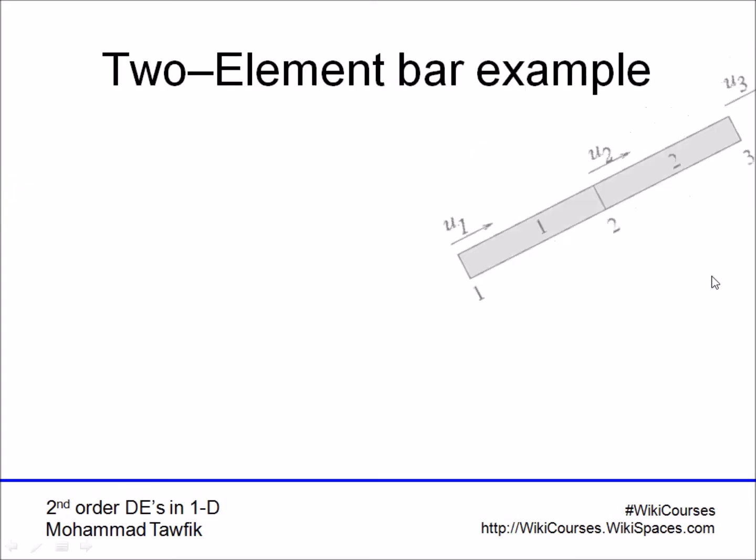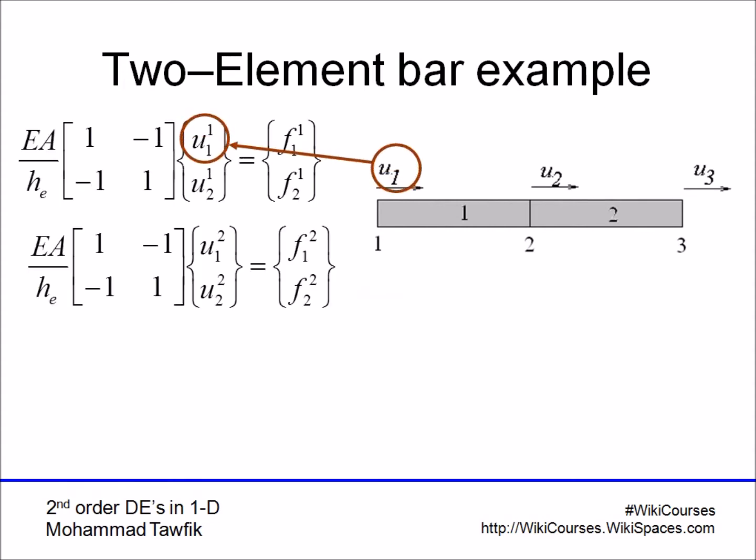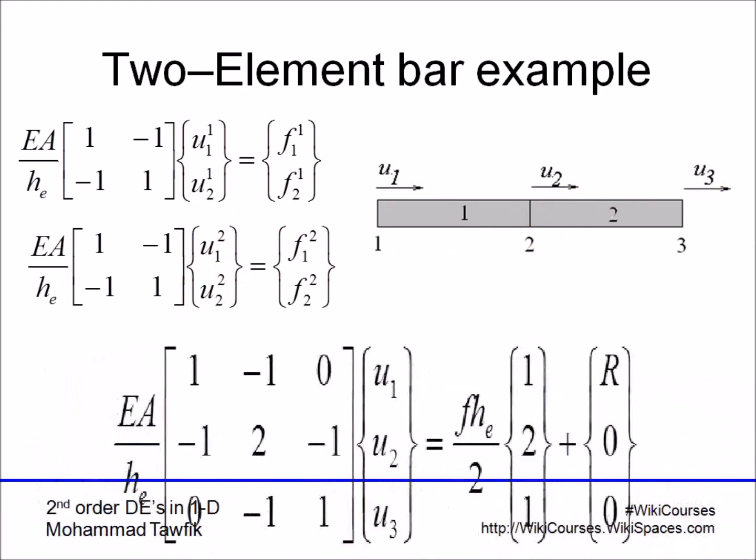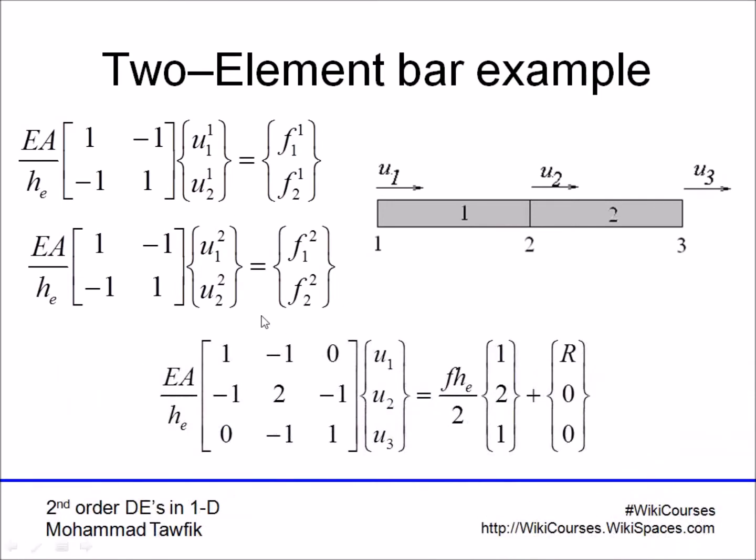We're going to use this for a two-element bar. Here you have, again, the displacements should be equal at the middle. So when you assemble the matrix, you're going to get a 3 by 3 global stiffness matrix that has the excitation term coming because we added the distributed force F.